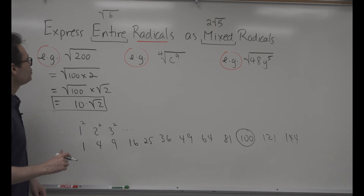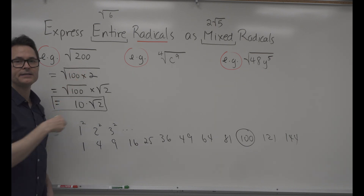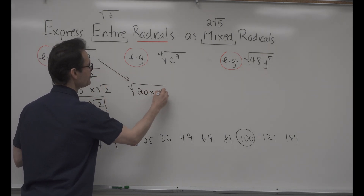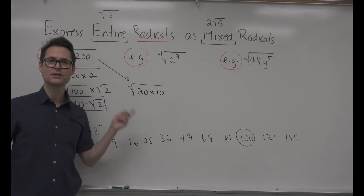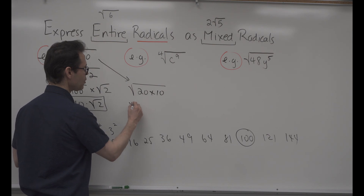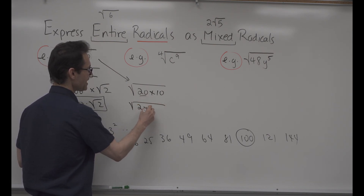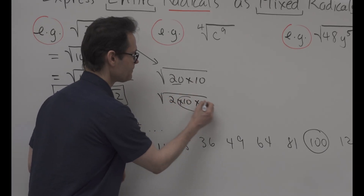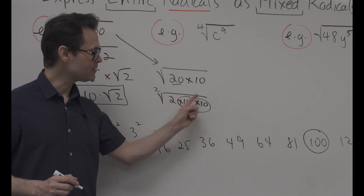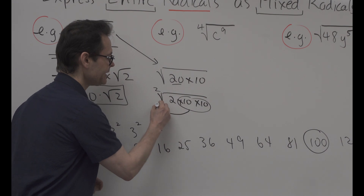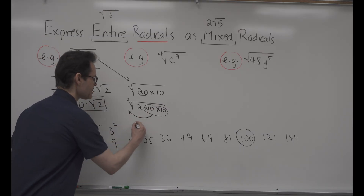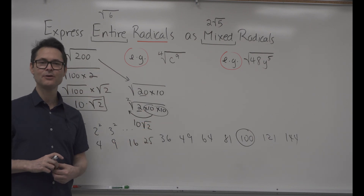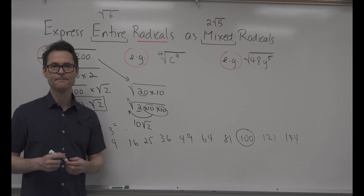Another method is to simply start breaking down 200. Write it as 20 times 10, and then 20 is 2 times 10, so you have 2 times 10 times 10. This method doesn't require knowing all your perfect squares — you just break it down. In square root land, for every pair on the inside, one gets to leave on the outside. With two 10s on the inside, the 10 comes to the outside and the 2 gets stuck inside, giving 10√2 — the same answer.